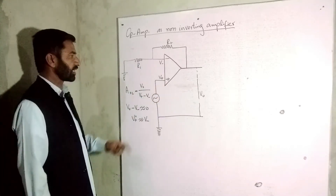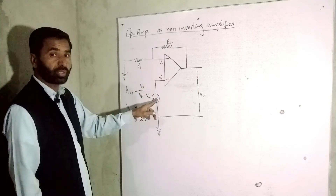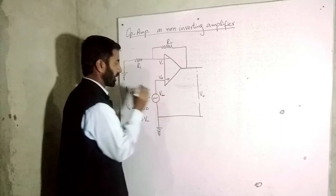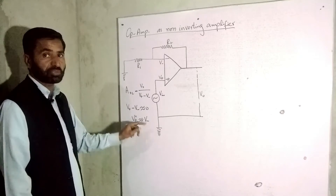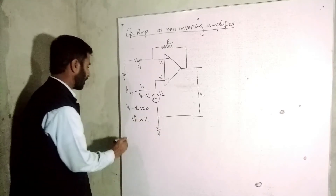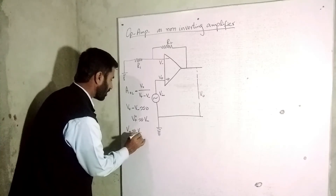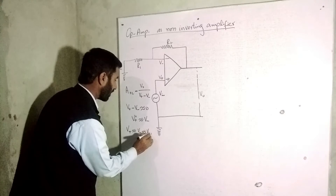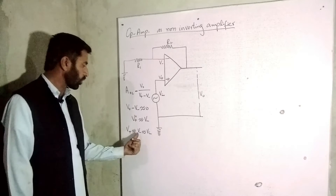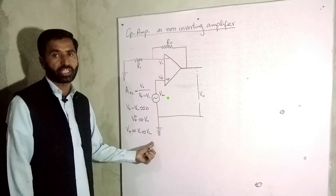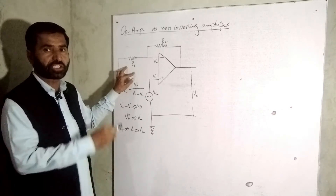Because the open loop gain is very large, the voltage difference between the two input terminals is nearly equal to zero. This means V minus is nearly equal to V plus, and since we connect the input Vin to the non-inverting terminal V plus, we have V minus approximately equal to Vin. Now we calculate the current flowing across resistance R1.